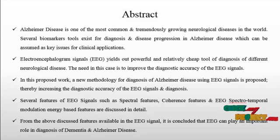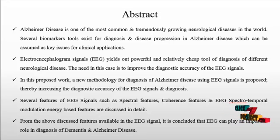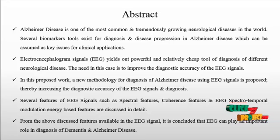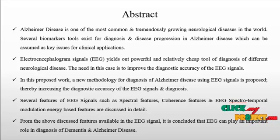EEG is also used to diagnose sleep disorders, coma, encephalopathy, and brain death. EEG used to be a first-line method of diagnosis for tumors, strokes, and other focal brain disorders, but this use decreased with the advent of high-resolution anatomical imaging techniques such as MRI and CT scanning.